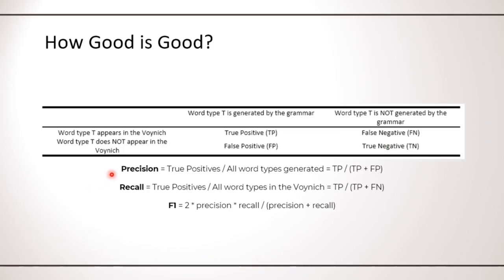We can then define the metrics shown below. The precision is the percentage of words generated by the grammar which do appear in the manuscript. So a grammar with precision 1 or 100 percent will generate only words that appear in the Voynich. Notice this does not mean it generates all of the Voynich word types. The recall is the percentage of words in the Voynich that are generated by the grammar.